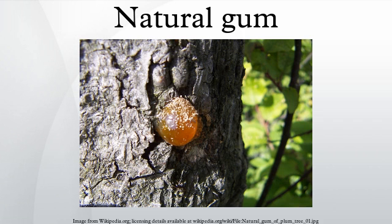Natural gums are polysaccharides of natural origin, capable of causing a large increase in viscosity, even at small concentrations. In the food industry, they are used as thickening agents, gelling agents, emulsifying agents, and stabilizers.